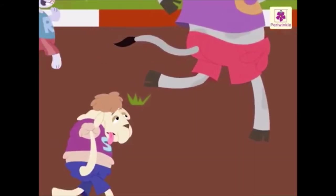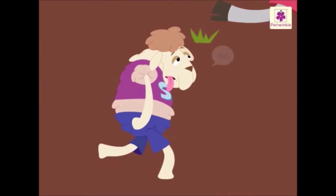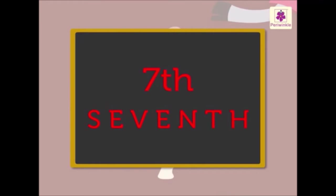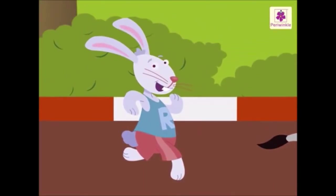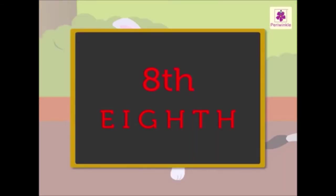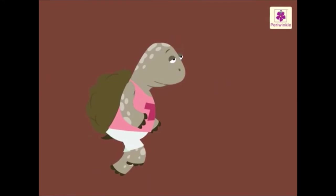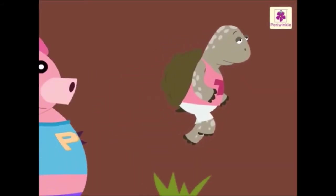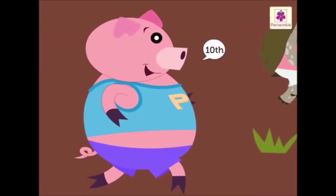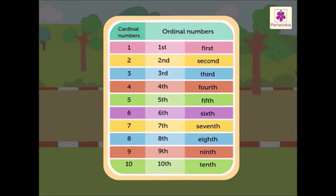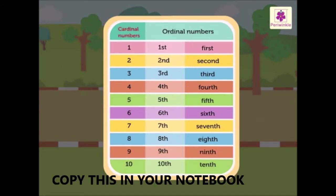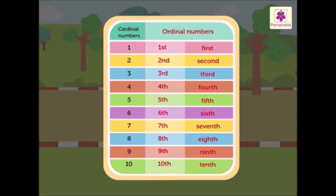The sheep is at the seventh position. The rabbit is at the eighth position. The tortoise came ninth in the running race. The pig is at the tenth position. Let us look at this table — it shows the cardinal numbers one through ten and the corresponding ordinal numbers first to tenth.